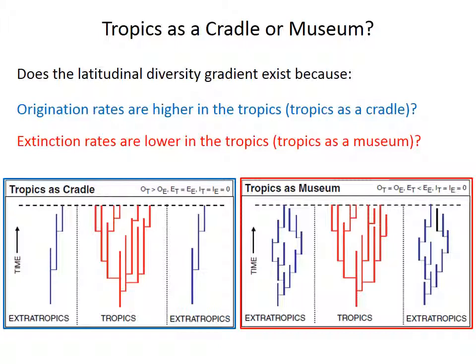The alternative is that origination rates are relatively constant in all regions, but that taxa are more likely to go extinct outside of the tropics. That explanation would consider the tropics as a museum, because lower extinction in the tropics would tend to preserve taxa there for longer geological time durations — kind of like preserving old things in a museum. So how can the fossil record test these ideas?